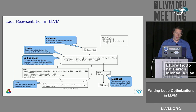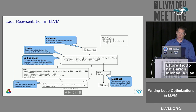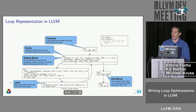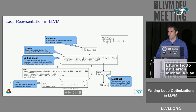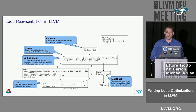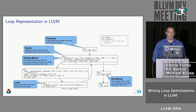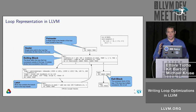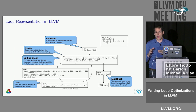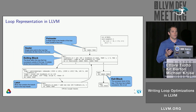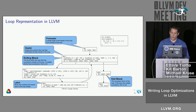Last, you have the latch, which is the block that contains the branch back up to the loop header. These are the common parts of the loop that you will often use and refer to when doing loop optimizations.